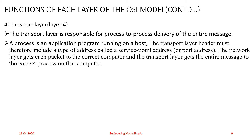What the Transport layer does is ensure that the whole message arrives intact and in order, overseeing both error control and flow control at both the source and the destination level. The Transport layer also tries to establish and check whether there is some relationship between the data frames or packets sent subsequently from transmitter to receiver.